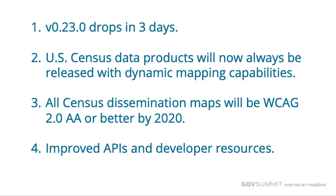Immediately, we are releasing a new version of our data dissemination platform called data.census.gov in about three days. Brand new code base — it'll look different than what you just saw. But effectively, it leans into this ability to join tabular data with vector data on the fly. I'd encourage you to check it out and give us your feedback, because we are soliciting comments and making sure we can make this application as good as possible. We want to work collaboratively and iteratively. Second, every single data product we now release from the platform will have dynamic mapping capabilities automatically baked in — and vector tiles are allowing us to do that.